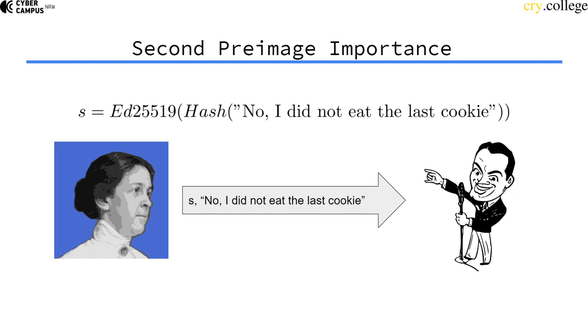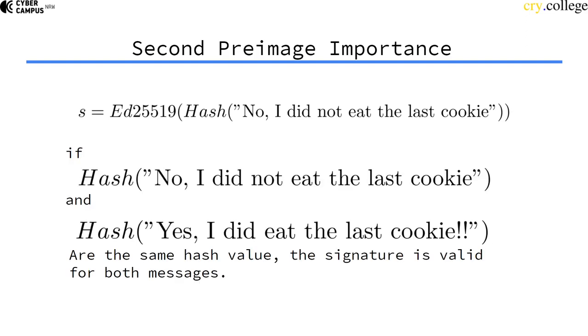Well, if I find a second preimage—namely, another message that I can put into the hash function that returns the same hash value—then for this second message (the second preimage), the signature is also valid.